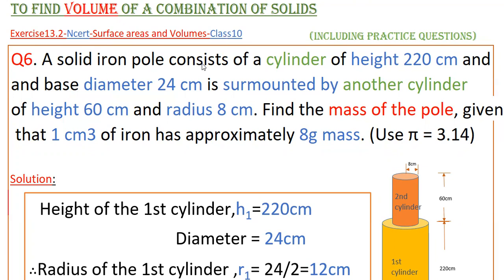A solid iron pole consists of a cylinder of height 220 cm and base diameter 24 cm surmounted by another cylinder of height 60 cm and radius 8 cm. Find the mass of the pole given that 1 cm³ of iron has approximately 8 grams mass. Use π = 3.14.